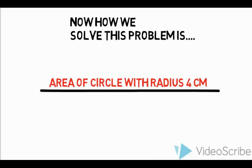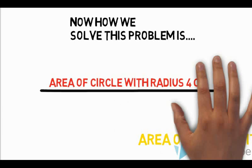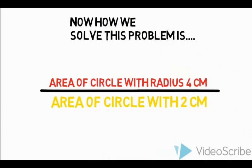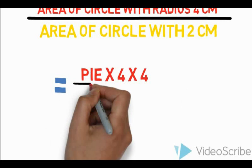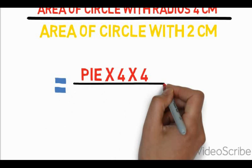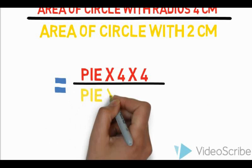And divide it by the area of circle with radius 2 cm. So, solving it further, we get pi into 4 into 4, simple pi r squared formula, and divide it by pi into 2 into 2.